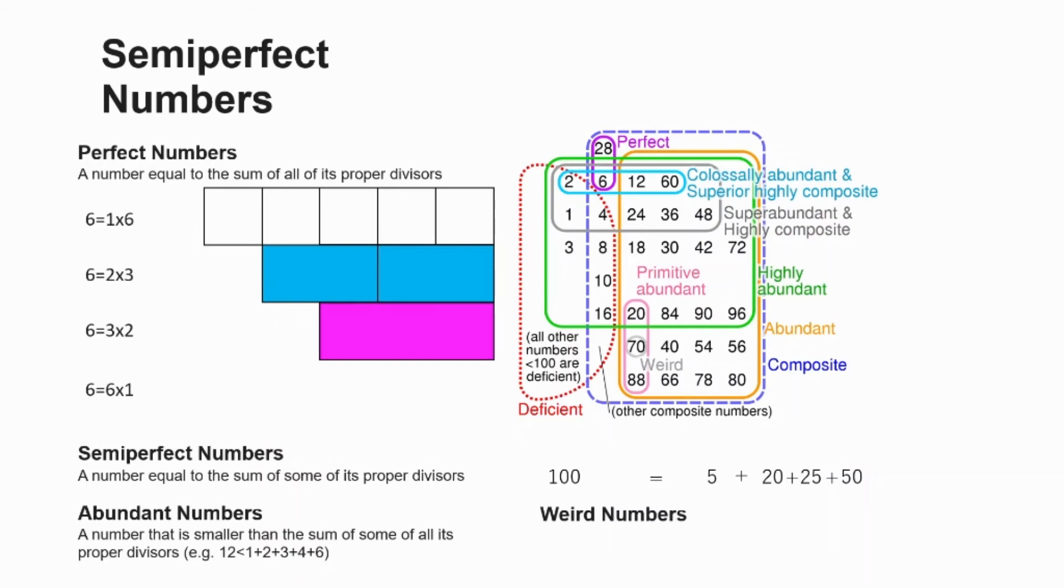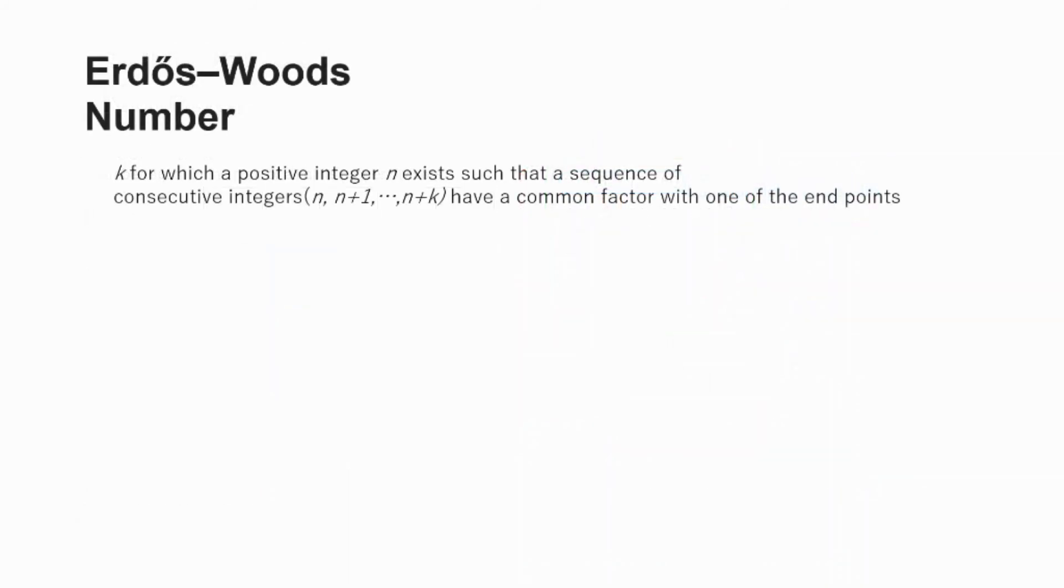100 is also an Erdos-Woods number. Now in a previous video we talked about Paul Erdos, the Hungarian mathematician, and how I think he's the coolest guy in the world. But even for a fan like me, this can get a little bit complicated if you're not really a fan of mathematics. But I promise you, I'll try to explain it in a way that makes sense.